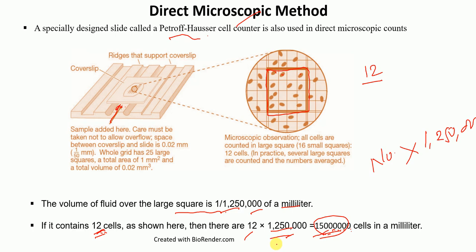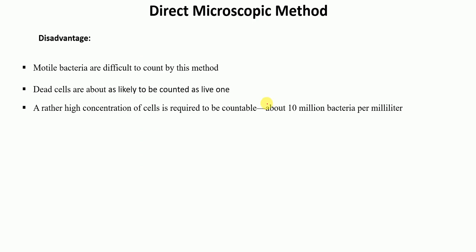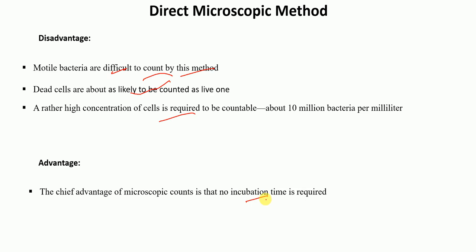This is the direct microscopic method. The disadvantages are that motile bacteria are difficult to count by this method, dead cells are also counted as live ones, and a higher concentration of cells is required — about 10 million bacteria per milliliter. The major advantage is that no incubation time is required; we can directly do the counting.